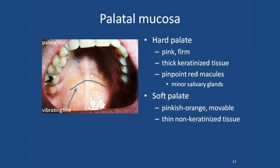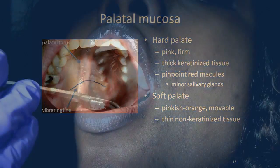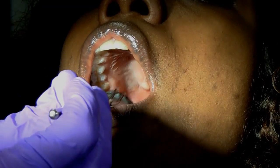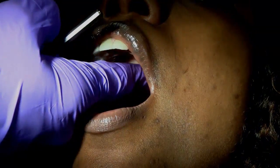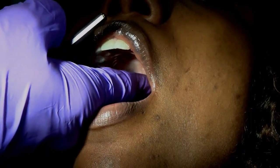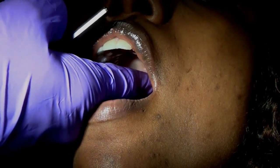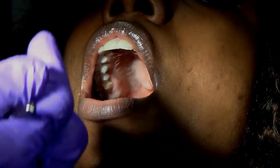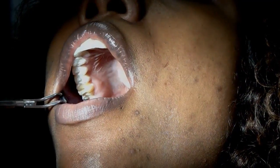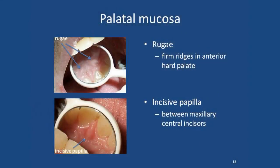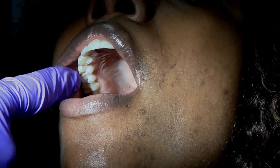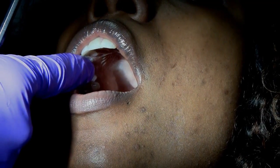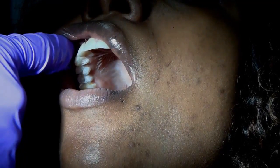We'll look at the soft palate and the junction of the hard and soft palate. Our patient has what's called a palatal torus — a bony growth in the center of the palate. If you palpate it, you can feel firm keratinized tissue over it and it is very firm and bony underneath. It's a totally normal finding you'll see quite often. Moving forward, we look at the rugae — the ridges in the front — and the incisive papilla just behind the two front teeth. These are common areas for injury, so you might see traumatic ulcers from hot coffee or chips.